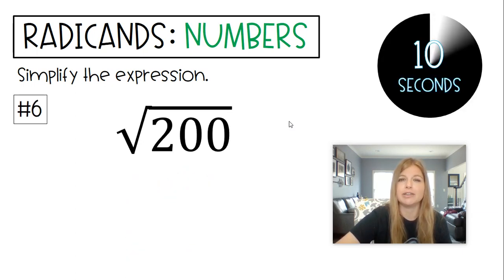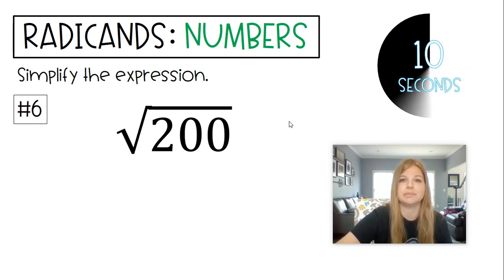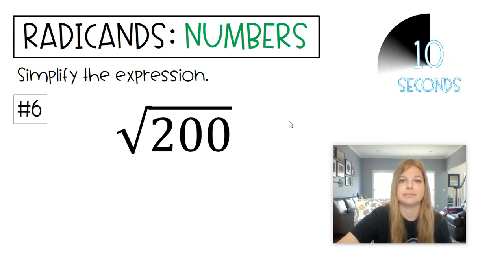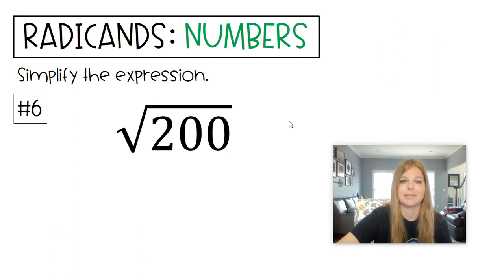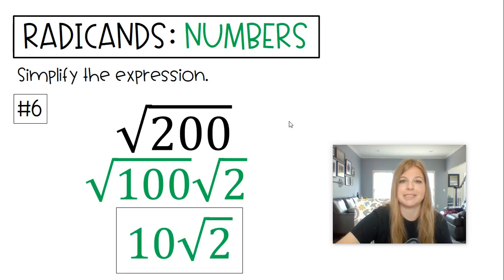Next one, Radical 200. The biggest perfect square that divides into 200 should be 100. So Radical 100 times Radical 2, which becomes 10 Radical 2.